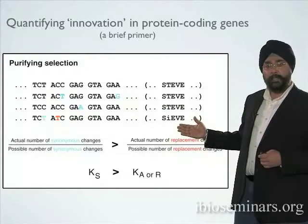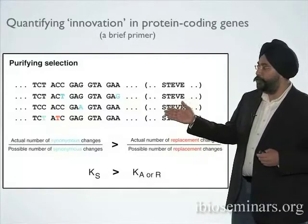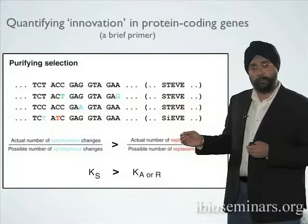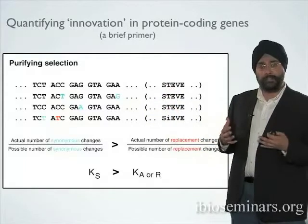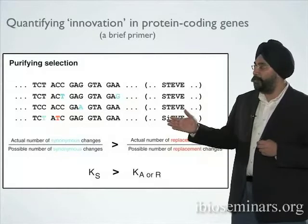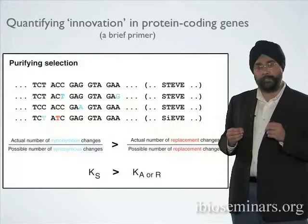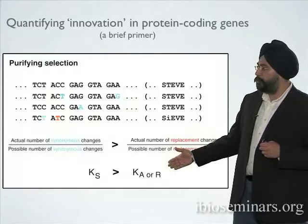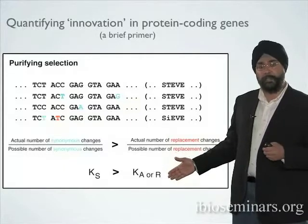Very rarely do you see a deviation from this optimal amino acid sequence. We should not infer that mutation has stopped hitting the replacement sites. Because mutation has introduced changes in both replacement and synonymous positions, the fact that we don't see replacement changes over evolutionary time indicates that natural selection deemed them deleterious and removed them from the population before they could spread. This is natural selection — and more specifically, purifying selection — acting to purify the population from these deleterious mutations. The rate of replacement changes is actually much lower than synonymous changes, regardless of the fact that both were introduced in roughly the same proportion.